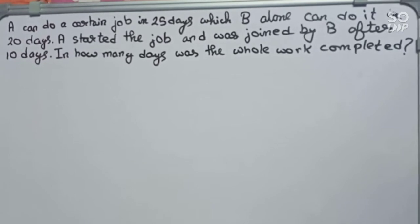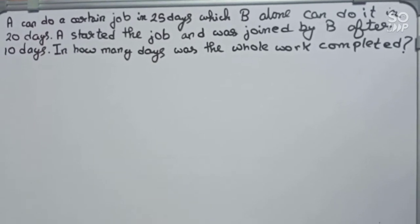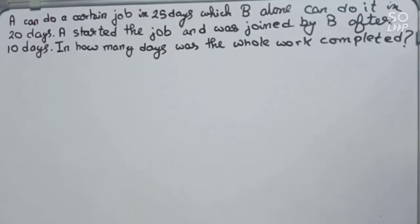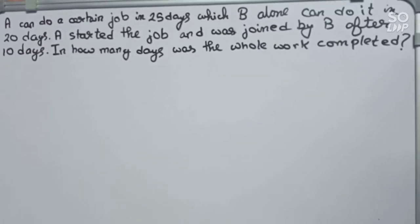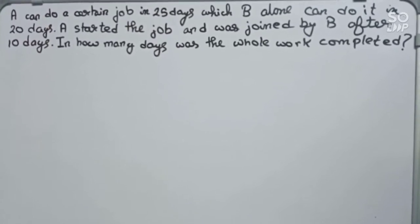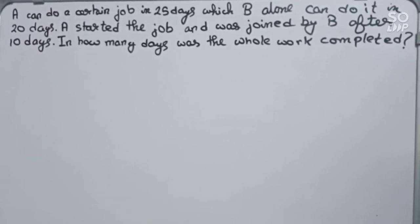Hello guys, welcome to this video. In this video our question is: A can do a certain job in 25 days which B alone can do in 20 days. A started the job and was joined by B after 10 days. In how many days was the whole work completed? Let's start.